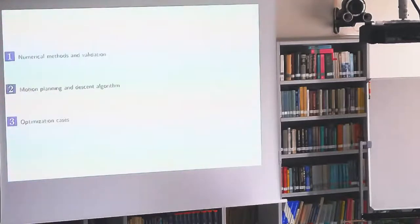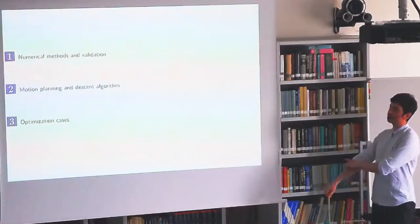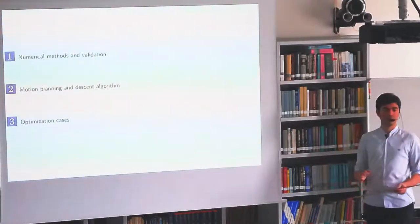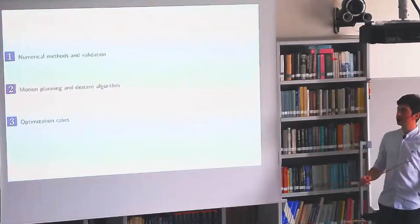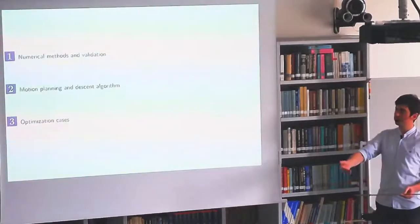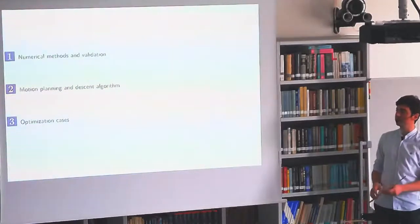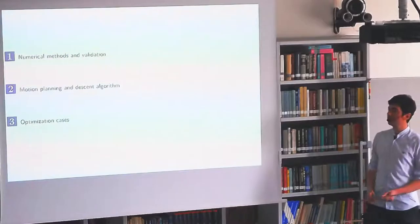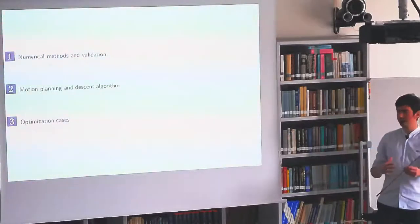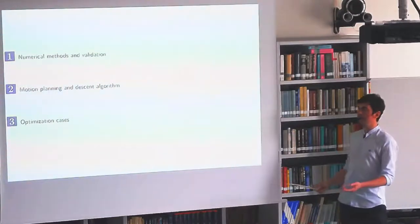The talk is structured as follows: first we discuss the numerical methods used for solving the two-phase Stefan problem and some validation cases; then we focus on motion planning, deriving the continuous adjoint and the optimization procedure; and finally we solve optimization cases where we want a certain shape of the interface given a control variable, which will typically be the heat flux at the domain boundary.